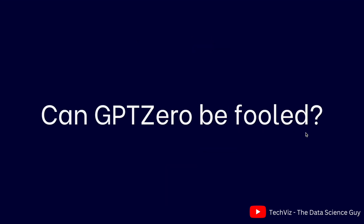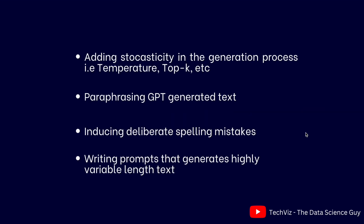The main question is: can GPT-0 be fooled? Possibly. The first pointer is to add stochasticity in the generation process — this could be by increasing the temperature or by increasing the value of k if you're doing top-k sampling. Such an approach would help the language model generate text that is less predictable, going around the distribution and having a chance of selecting the second, third, or fourth word rather than always choosing the most likely one.